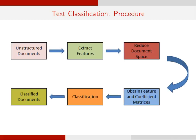This is a flow chart illustrating the method of text classification. Given a set of unstructured documents, suitable features are extracted from them. Features such as term frequency and inverse document frequency are generally used. These features span the document space.